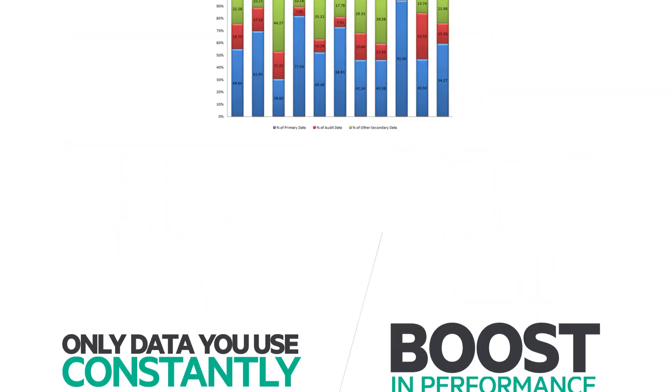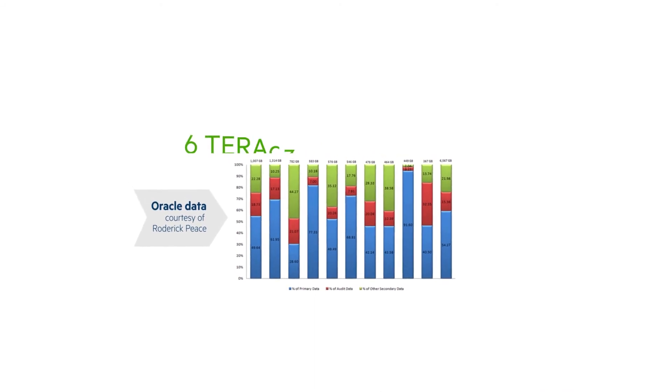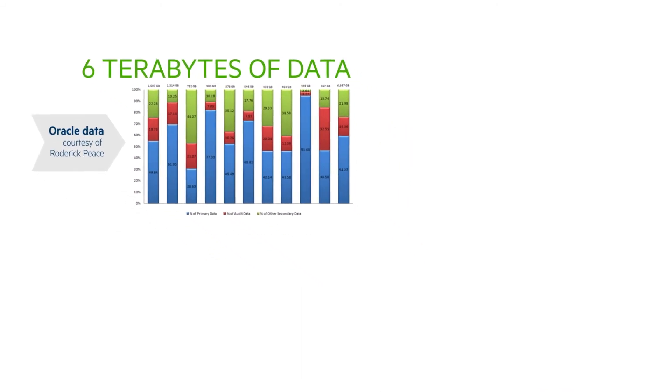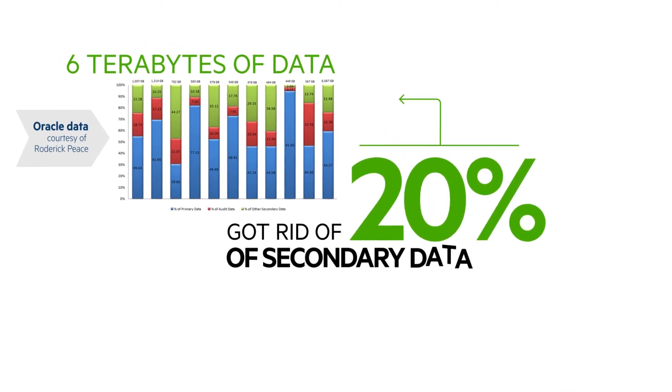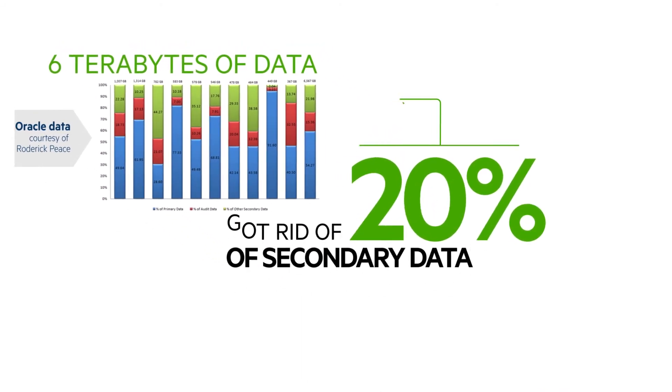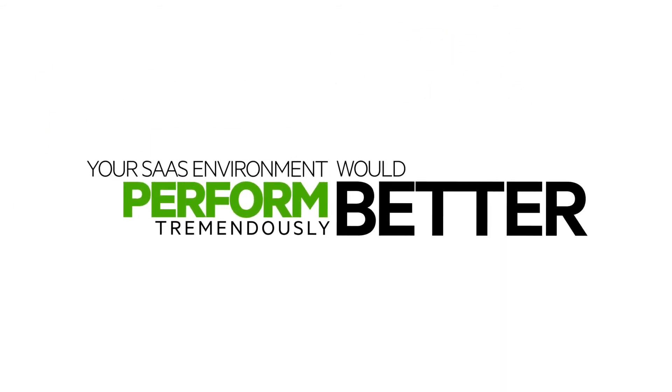Reducing your primary database to only the primary data that you use constantly gives you a huge boost in performance. For example, in a database with 6 terabytes of data, if you got rid of just 20% of secondary data, your SaaS environment would perform tremendously better.